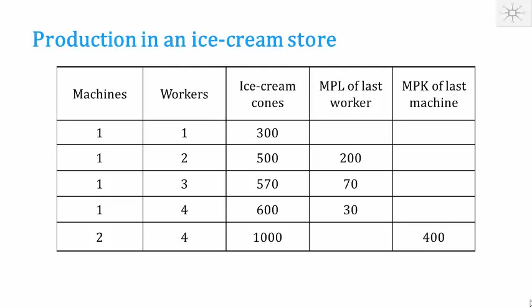We can also check constant returns to scale. Comparing one machine and two workers (500 cones) with two machines and four workers (1,000 cones), doubling the inputs doubles production. In the real world there can be increasing or decreasing returns to scale, but we assume constant returns to scale in our analysis — the natural reference point, as if you simply place another identical setup beside the first.